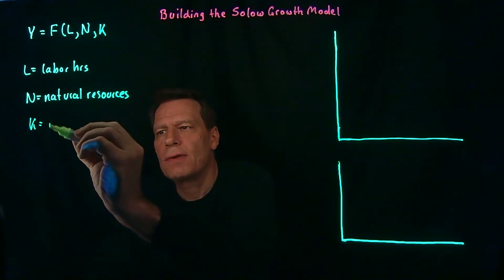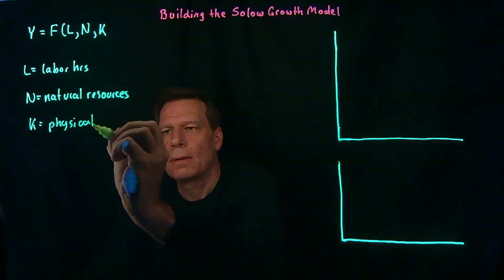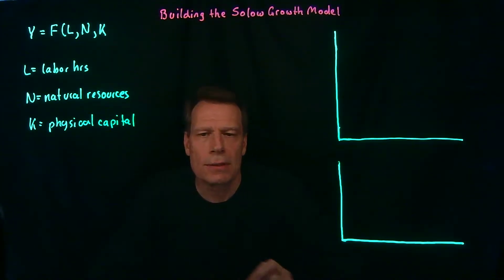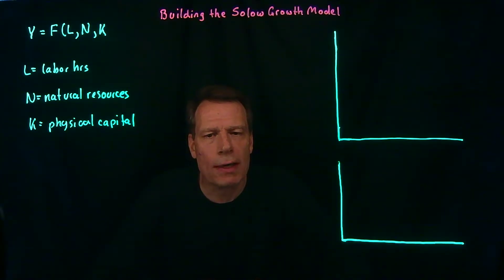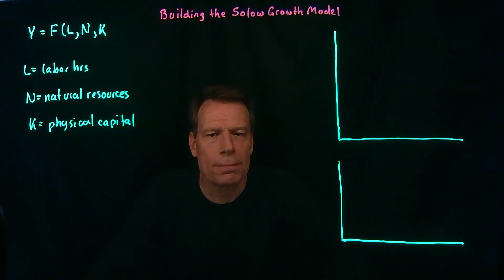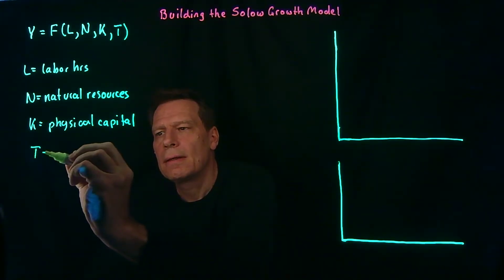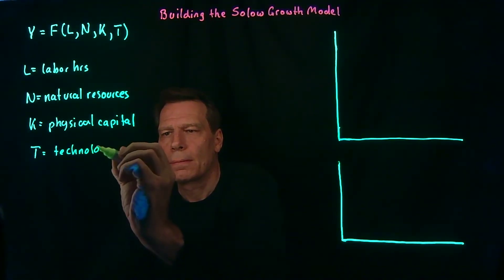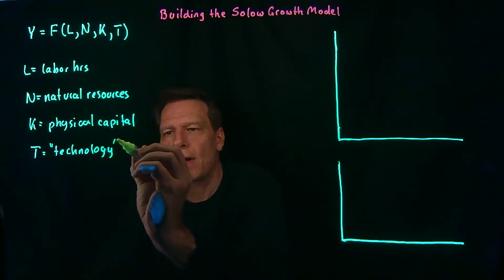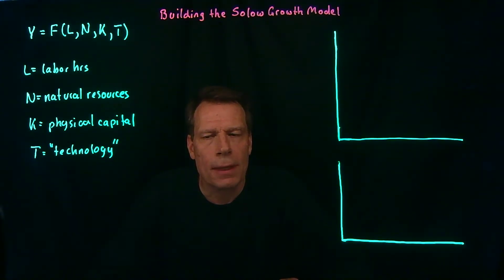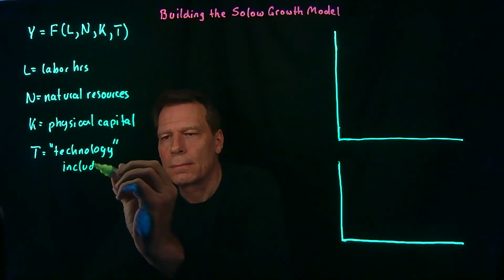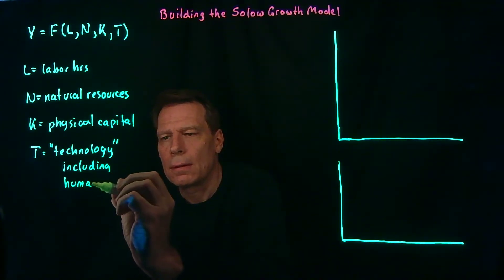Then we're going to add K, where K stands for physical capital: factories, office buildings, equipment, but also public infrastructure like roads, electricity networks, and internet access. So by physical capital, we mean both what's provided by the private sector as well as what's provided publicly. Finally, we're going to add a term T, where T stands for 'technology' — in quotation marks — because we don't just mean the current state of technology and knowledge, but also how well people can use that technology, including what we've been calling human skills or human capital.